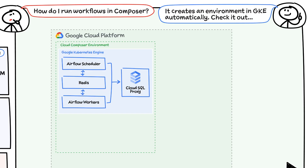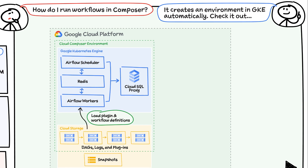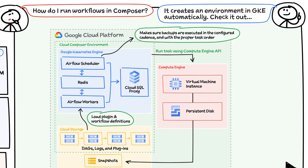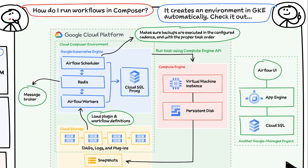The Airflow platform is based on a microservices architecture running in Google Kubernetes Engine. Airflow workers load plug-in and workflow definitions from Cloud Storage and run each task using the Compute Engine API. The Airflow scheduler makes sure that backups are executed in the configured cadence and with the proper task order. Redis is used as a message broker between Airflow components. Cloud SQL proxy is used to communicate with the metadata repository. You also get a pre-built Airflow UI using App Engine and Cloud SQL.